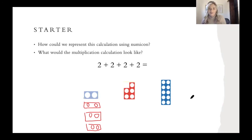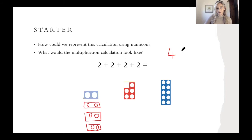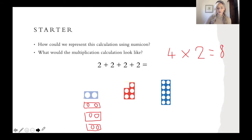Well done for having a go at that. I'm going to write it out quickly. So I know that I've got one, two, three, four groups, and in my four groups I have two. And if we've been practising our times tables then we should know that four times two is eight.